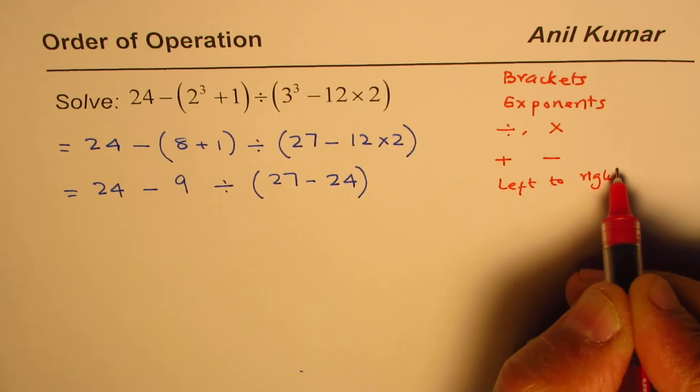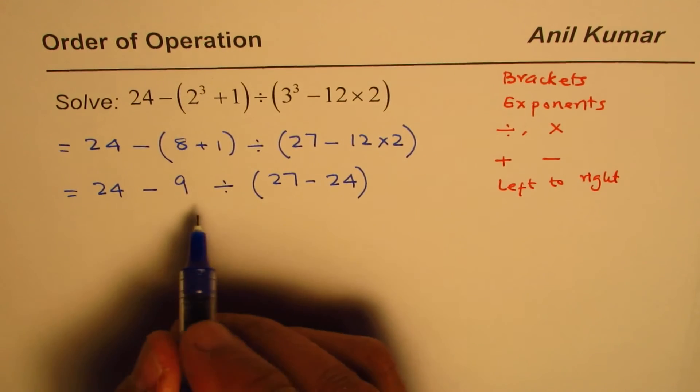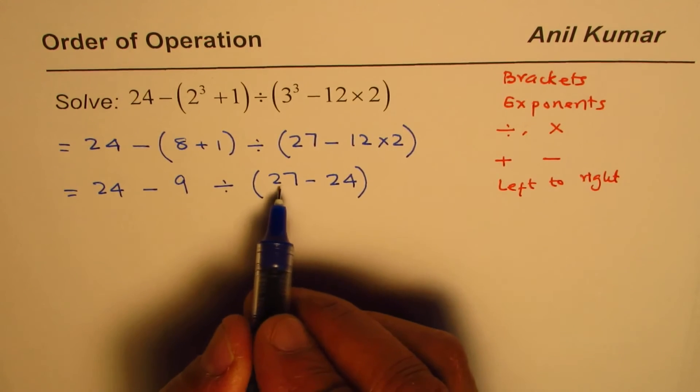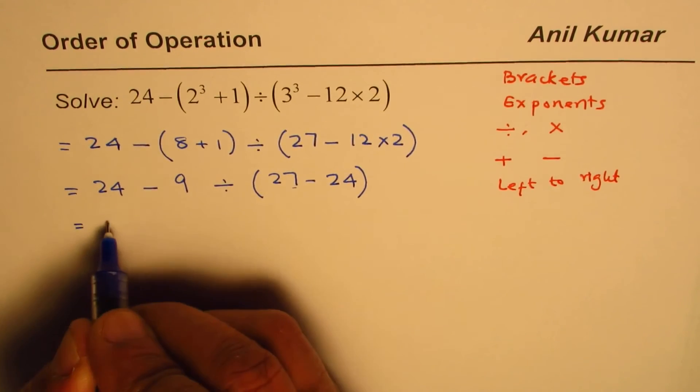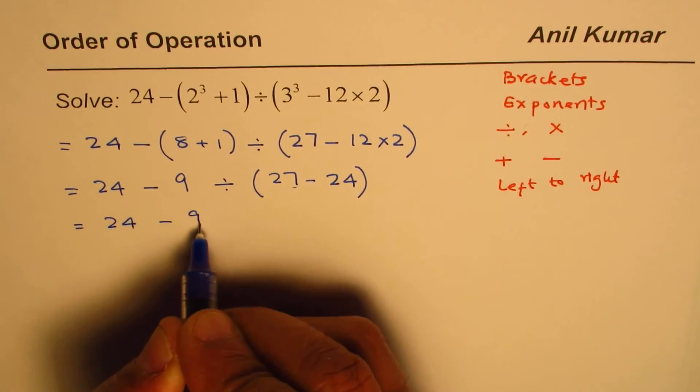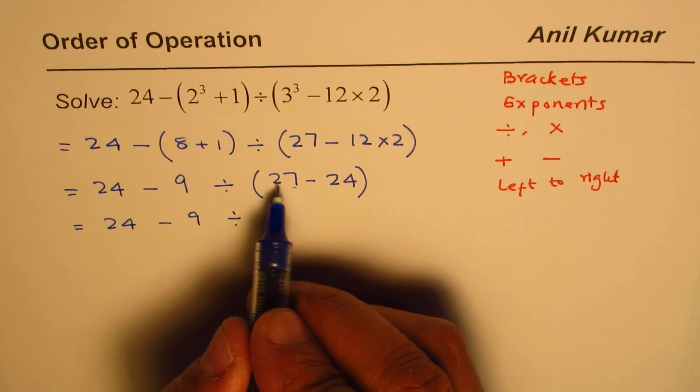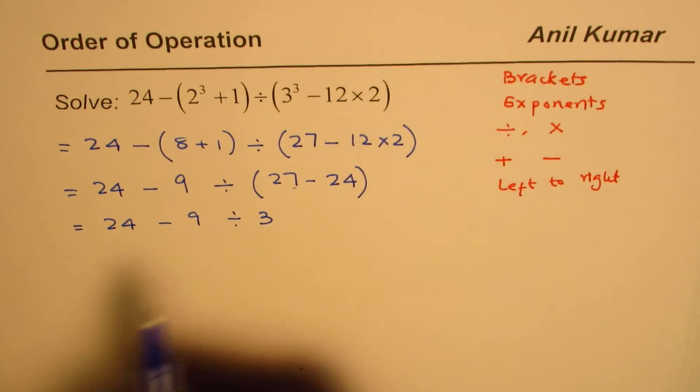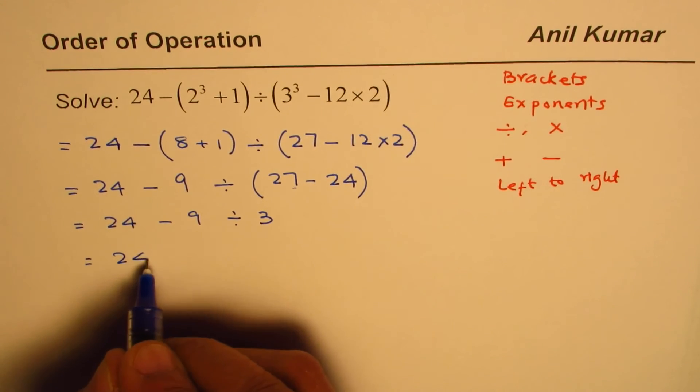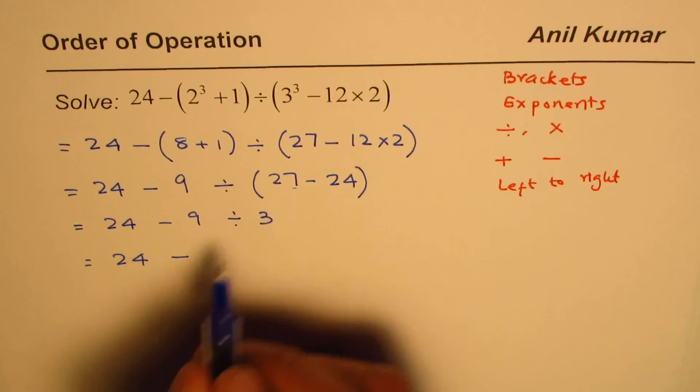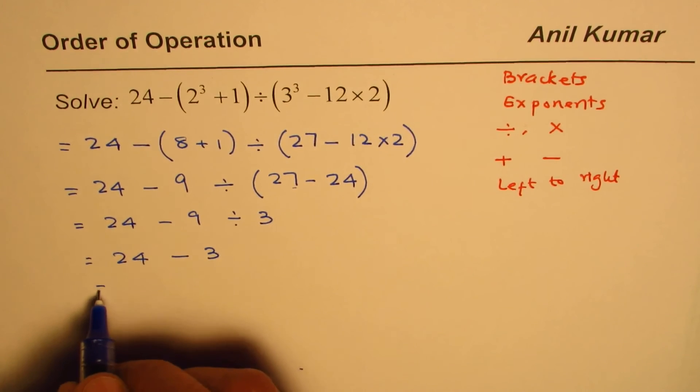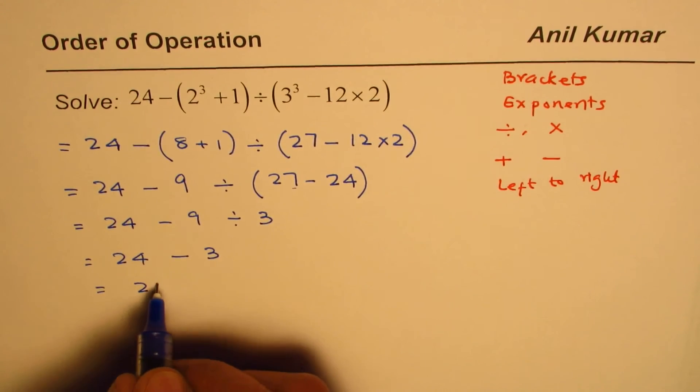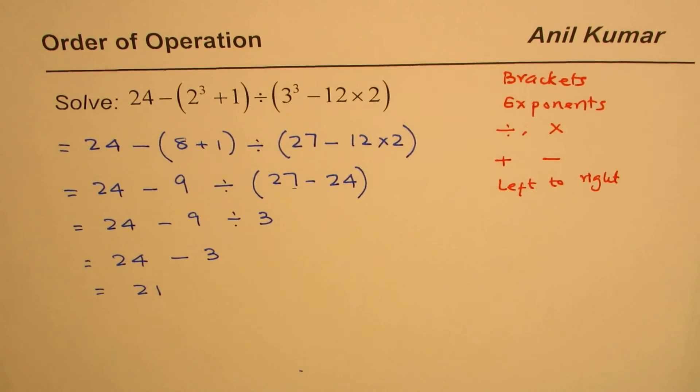Now here we'll do this bracket first, so we have 24 minus 9 divided by 27 minus 24 is 3. Now we have to do division, so we'll do 24 minus 9 divided by 3 which is 3, and 24 minus 3 is 21, so that becomes our answer.